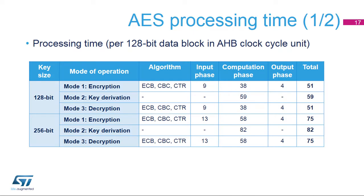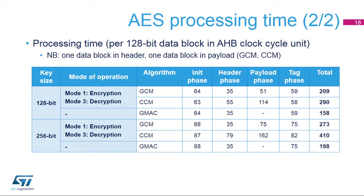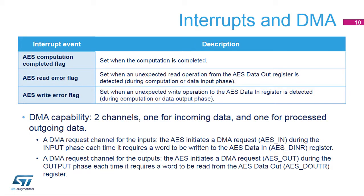Here are the processing times for different key sizes and algorithms. The following events are able to trigger an interrupt in the Nested Vectored Interrupt Controller: AES computation completed, AES read error, and AES write error. Direct memory access requests are generated internally for both incoming and outgoing data. The DMA channel must be configured in memory-to-peripheral or peripheral-to-memory mode, with a data size equal to 32 bits.